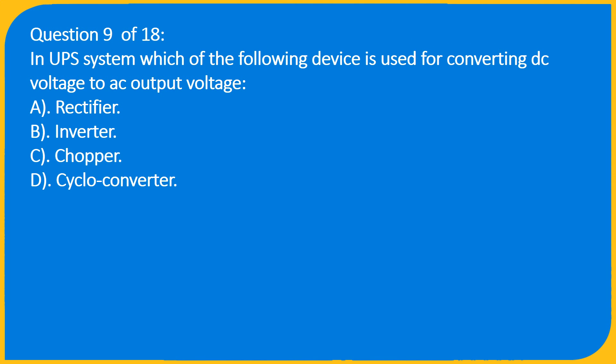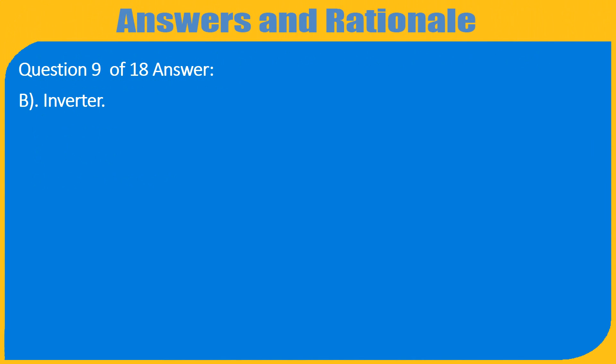Question 9 of 18: In UPS system which of the following device is used for converting DC voltage to AC output voltage: A. Rectifier, B. Inverter, C. Chopper, D. Cycloconverter. Question 9 of 18 Answer: B. Inverter.